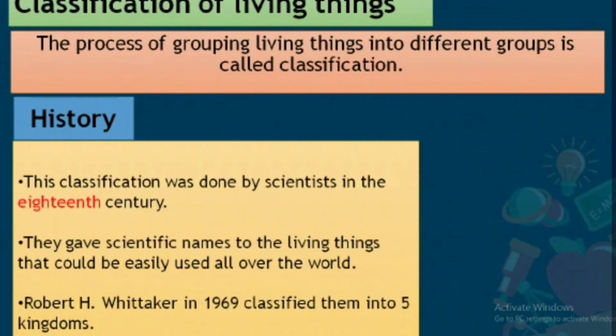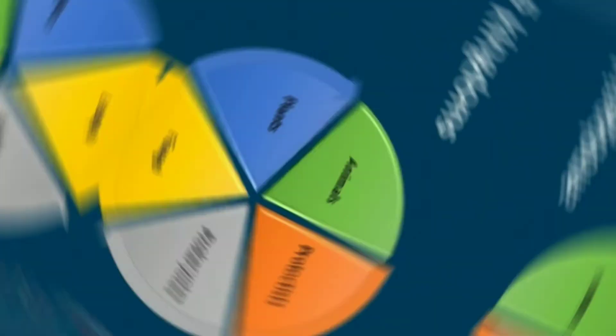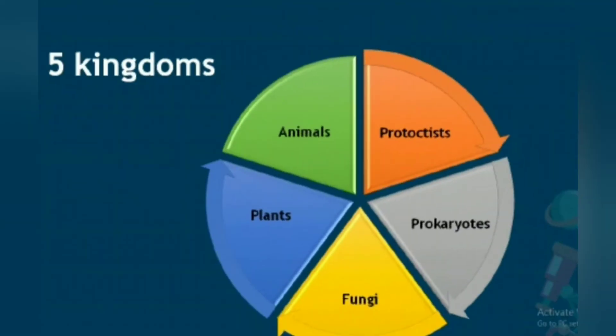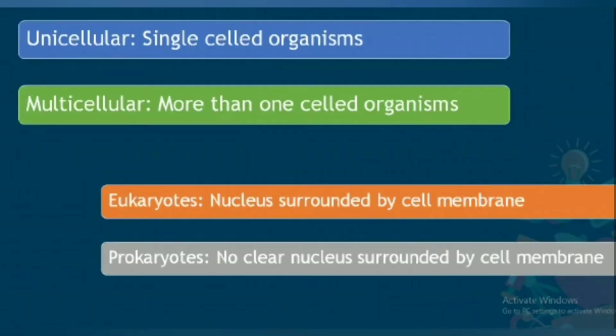Robert H. Whittaker in 1969 classified living things into five kingdoms. These five kingdoms are Protoctists, Prokaryotes, Fungi, Plants, and Animals.